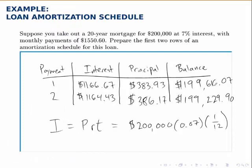We continue this process for another 238 rows, filling in all 240 payments. Each time, the interest payment drops a little because the balance is slowly dropping. Each time the interest payment drops, the principal payment goes up by the same amount, because interest and principal always add up to the fixed monthly payment of $1,550.60. We slowly watch the interest payments decrease, the principal payments increase, and the balance slowly drop until at the last payment, the balance goes to zero and the loan is fully paid off.